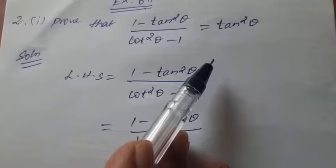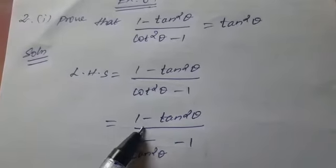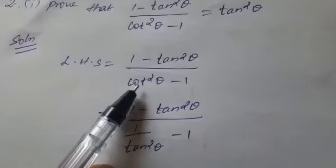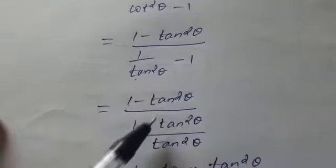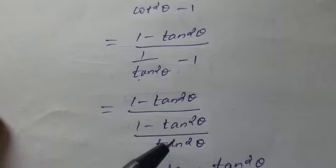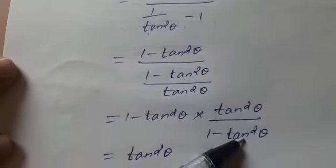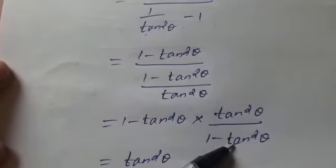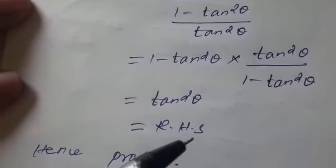So, we have (1 minus tan squared theta) divided by (cot squared theta minus 1). Since cot squared theta equals 1 by tan squared theta, the denominator becomes (1 by tan squared theta) minus 1. Cross-multiplying, (1 minus tan squared theta) divided by tan squared theta — dividing gives 1 minus tan squared theta cancelling, leaving tan squared theta, which is the RHS. Hence proved.